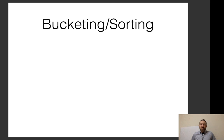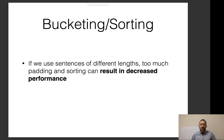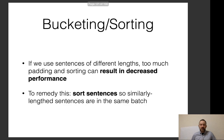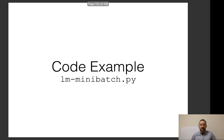There's also bucketing and sorting. If we use sentences of very different lengths, too much padding and masking can decrease efficiency. To remedy this, it's common to sort sentences so similarly-lengthed sentences are in the same batch — length 25-27 in one batch, length 12-14 in another. The shorter sentences get padded only one or two words, not fifty, so you don't waste computation on words you're not calculating loss for anyway. We have a code example for mini-batching as well.